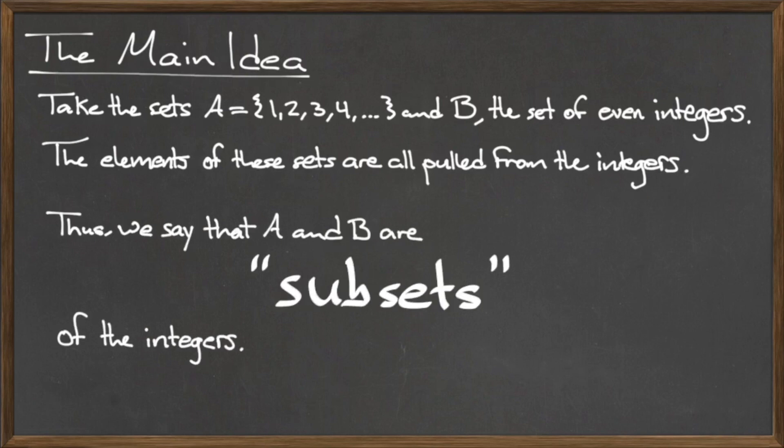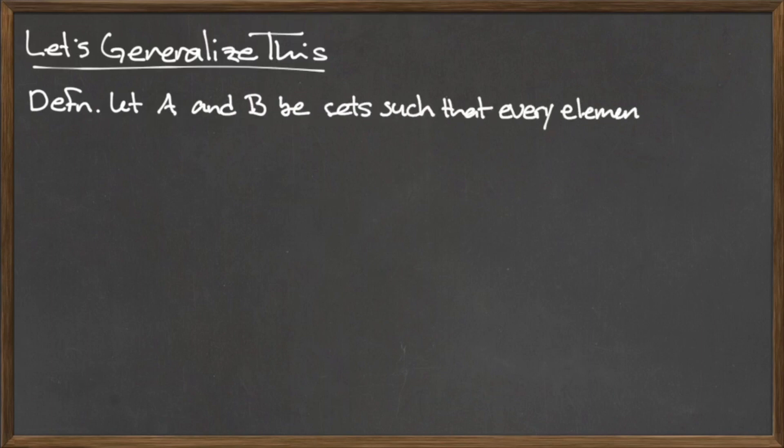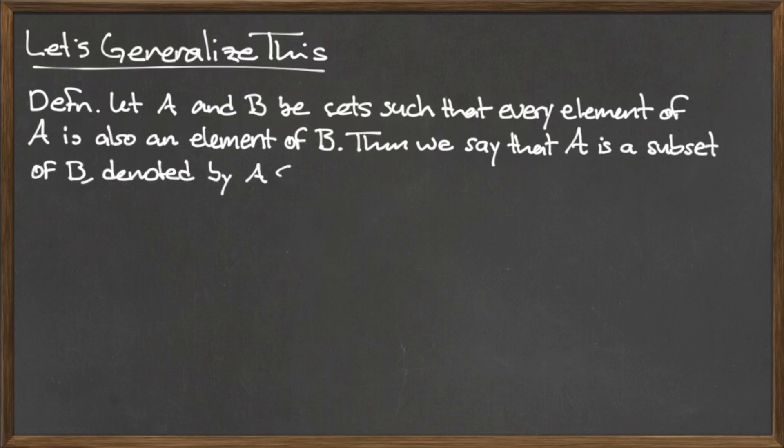So, we say that A and B are subsets of the integers. Now, let's give a more formal definition for a subset. Let A and B be sets such that every element of A is also an element of B. Then, we say that A is a subset of B,